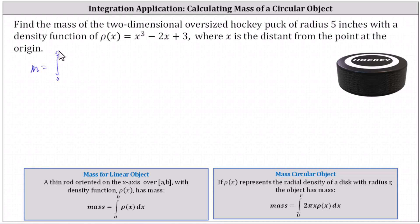And then we have 2πx times the density function x³ - 2x + 3 dx.